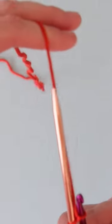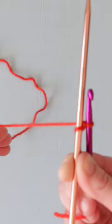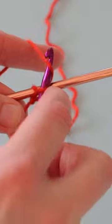Now bring your working yarn between your knitting needle and your crochet hook and behind the needle. Again, yarn over with your hook and draw that loop through the loop on the hook.